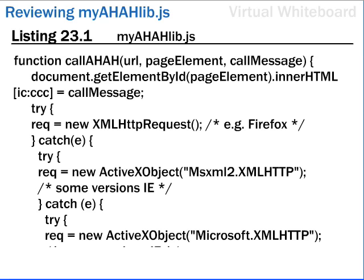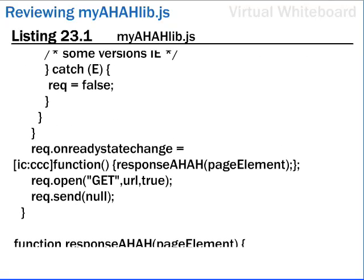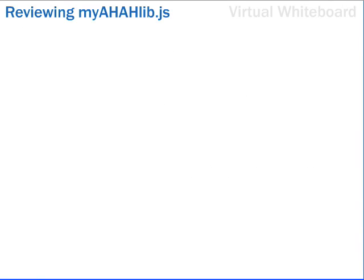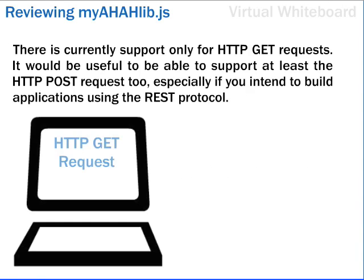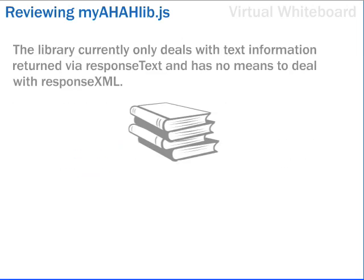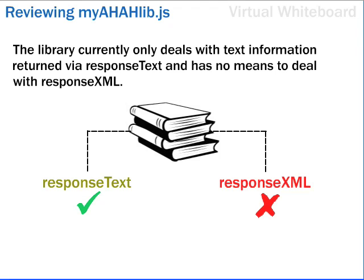This list shows the code of MyAhaLib.js. Let's consider how we may extend the capabilities of this library. There is currently support only for HTTP GET requests. It would be useful to be able to support at least the HTTP POST request too, especially if you intend to build applications using the REST protocol. The library currently only deals with text information returned via responseText and has no means to deal with responseXML.